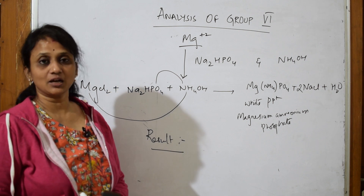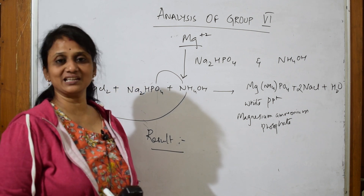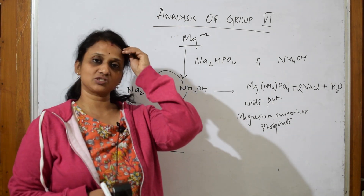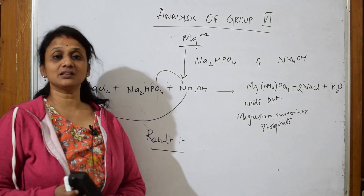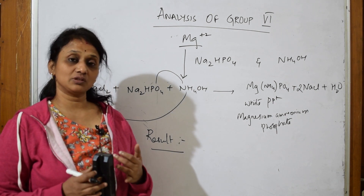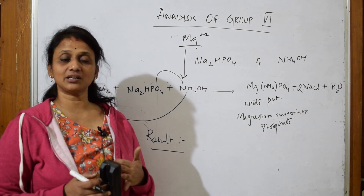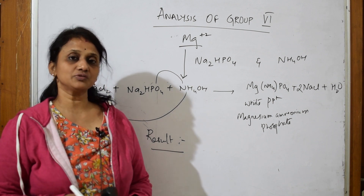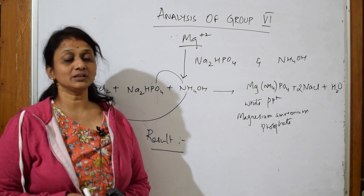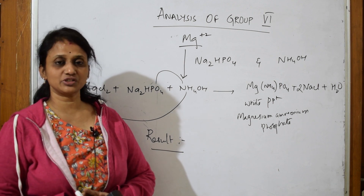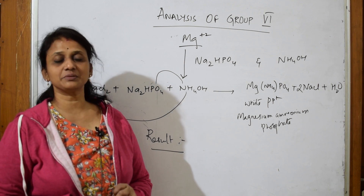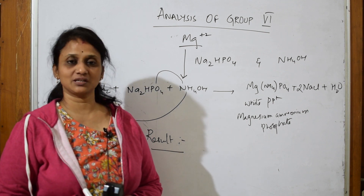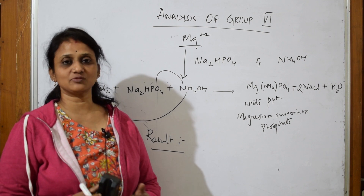This completes the salt analysis series — from zero group through Group 1, 2, 3, 4, 5, and Group 6. All these videos are in the salt analysis playlist on the channel. The community tab also has all anions, cations, and flowcharts posted. An additional flowchart useful for cation analysis is coming up. After this, the next practical will cover functional groups, followed by volumetric analysis.